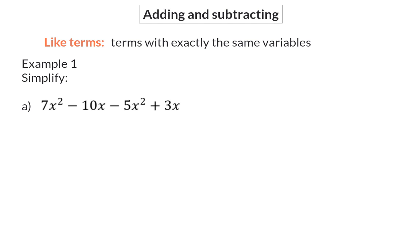Example 1, simplify. Here we have four different terms, and of these terms, the 7x squared and minus 5x squared are like terms because they have exactly the same variable. And then minus 10x and plus 3x are also like terms. To simplify, I am going to add up the like terms. This means I need to determine how many x squared we have. Note that I do not change the variable — I focus on the coefficients. So I take 7 and minus 5 and add them up.